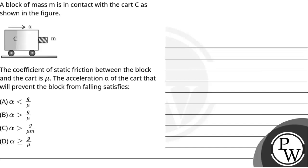Hello! Let's read the question. The question says that a block of mass m is in contact with the cart C as shown in the figure. The coefficient of static friction between the block and the cart is mu. The acceleration alpha of the cart that will prevent the block from falling satisfies...